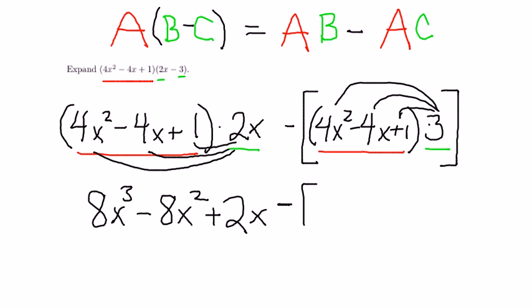Now, I'm going to carry the minus outside of the square brackets. 3 times 4x squared is 12x squared, minus 12x, and then plus 3.